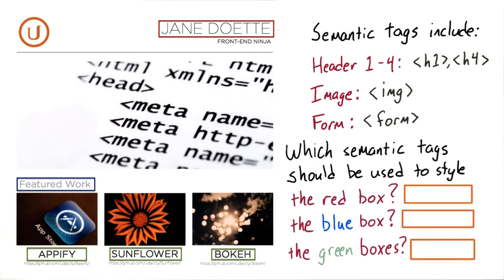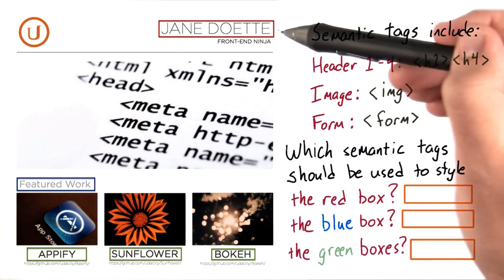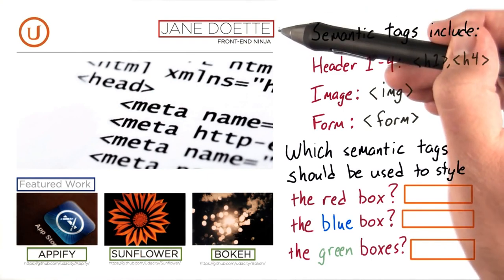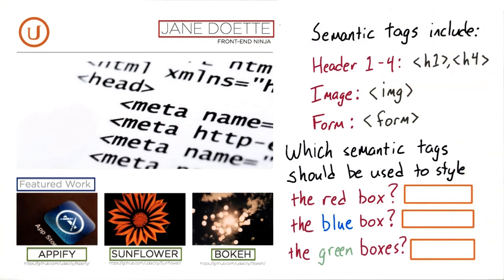Which semantic tags would you use to style the red box containing the name at the top, the blue box containing featured work, and the three green boxes containing the titles of our projects? Type your answers in here.